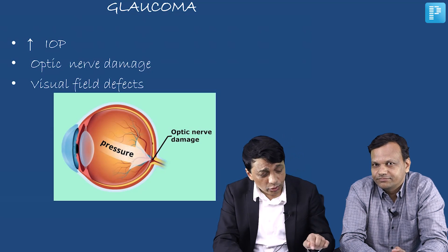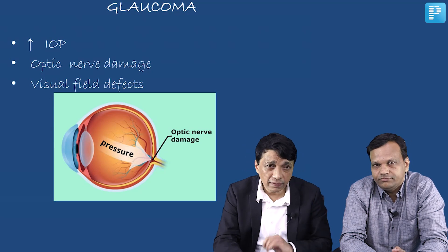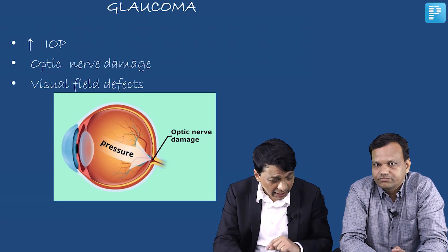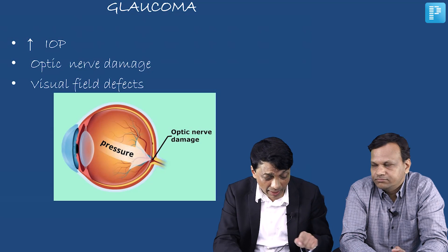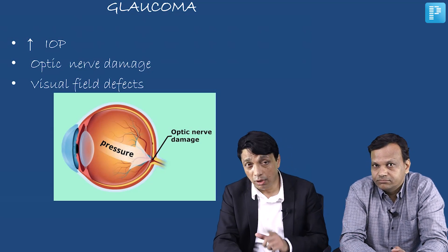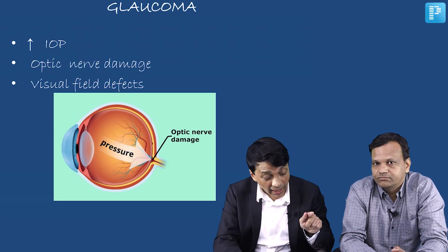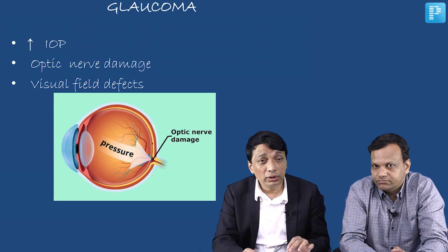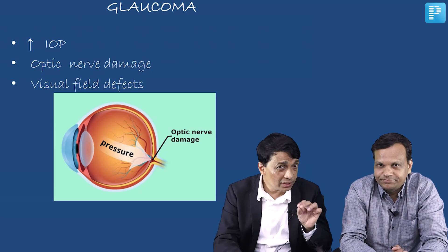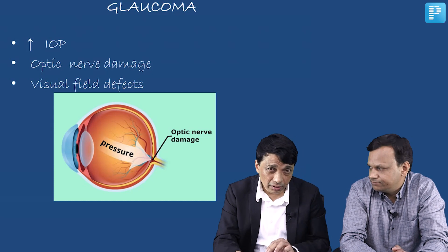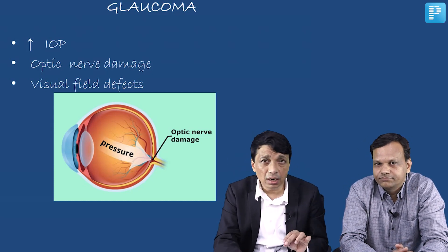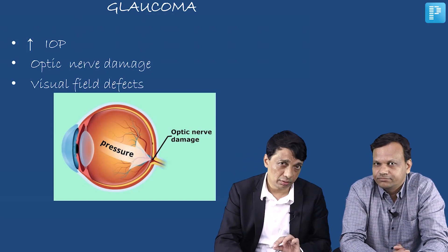For instance, let us assume that the pressure is 55 — very, very high — but the optic nerve is not damaged and the visual fields are normal, then this is not glaucoma. We call this ocular hypertension (OHT). This may convert to glaucoma or it may not, but right now it is not glaucoma.